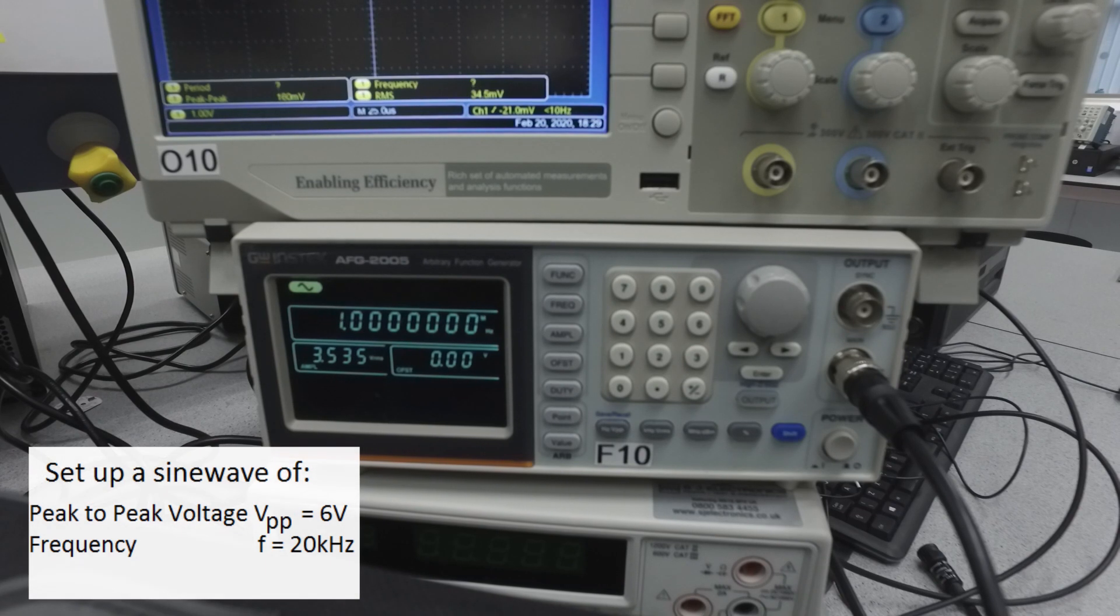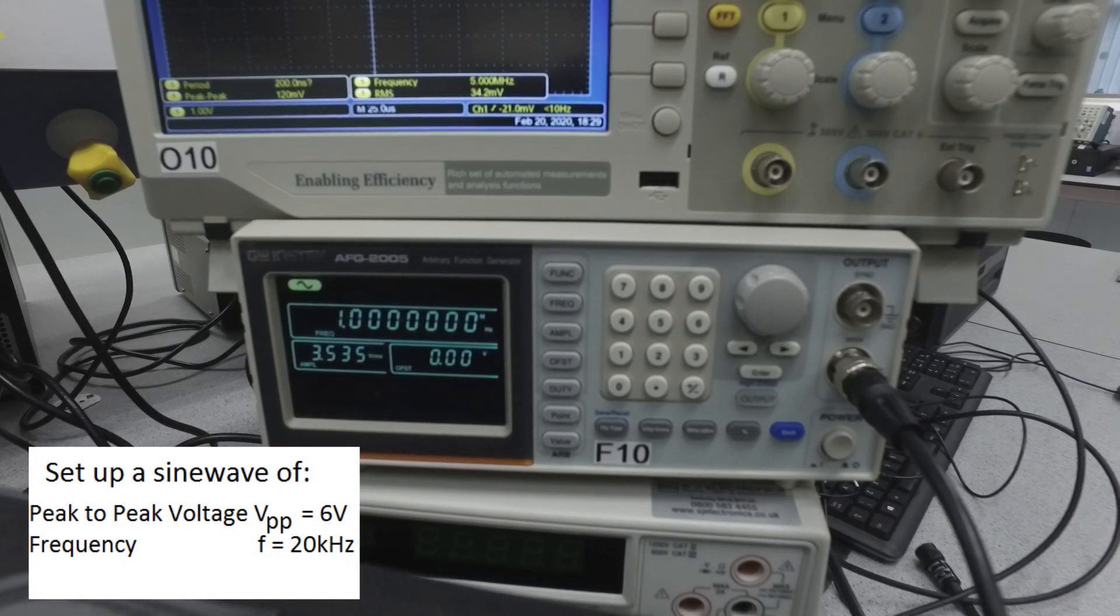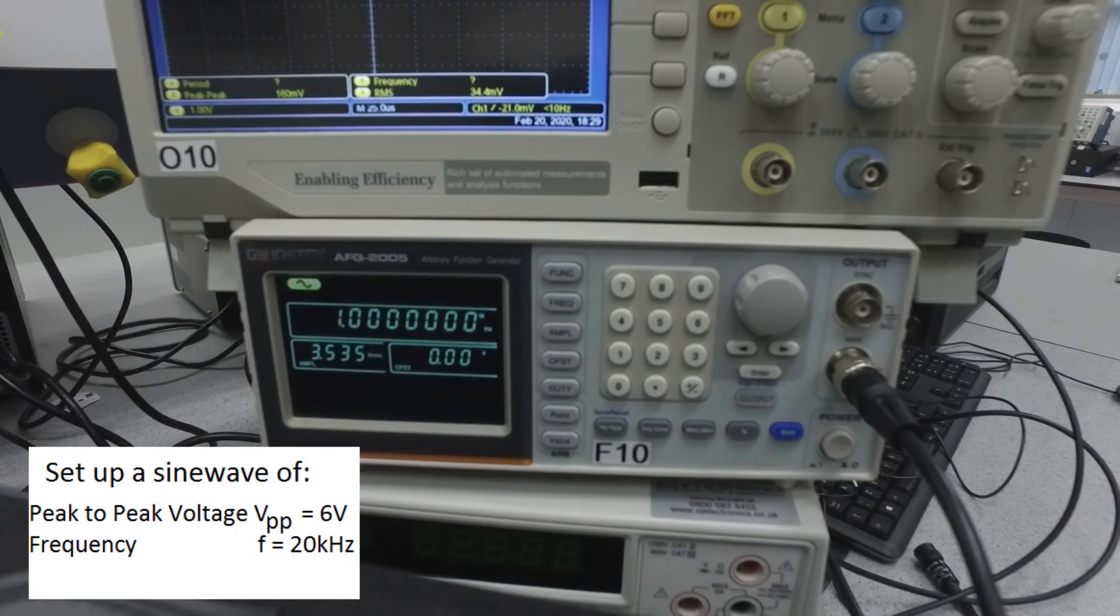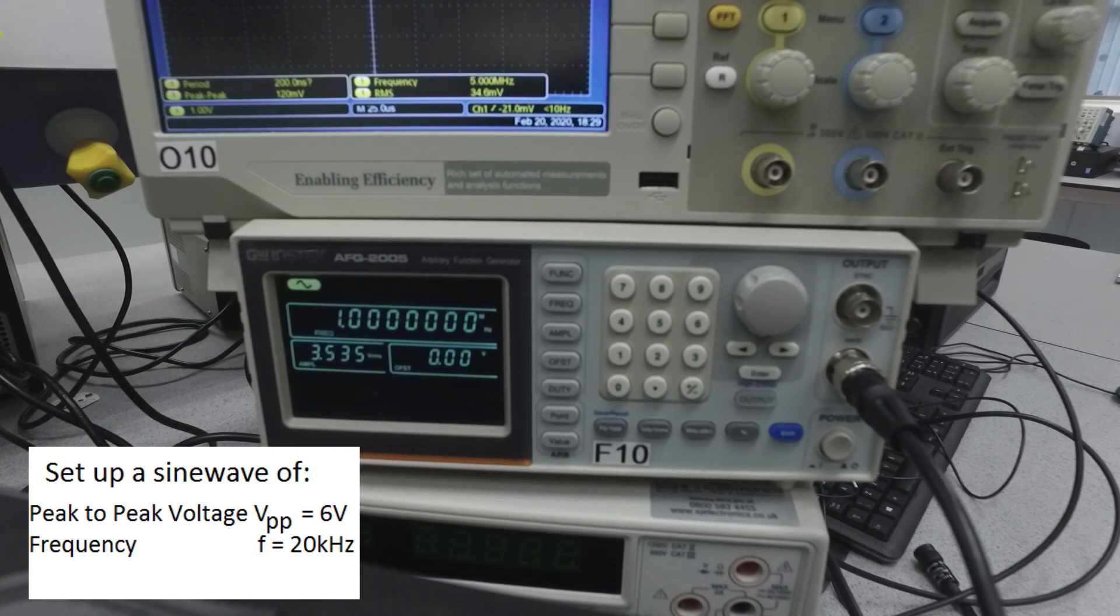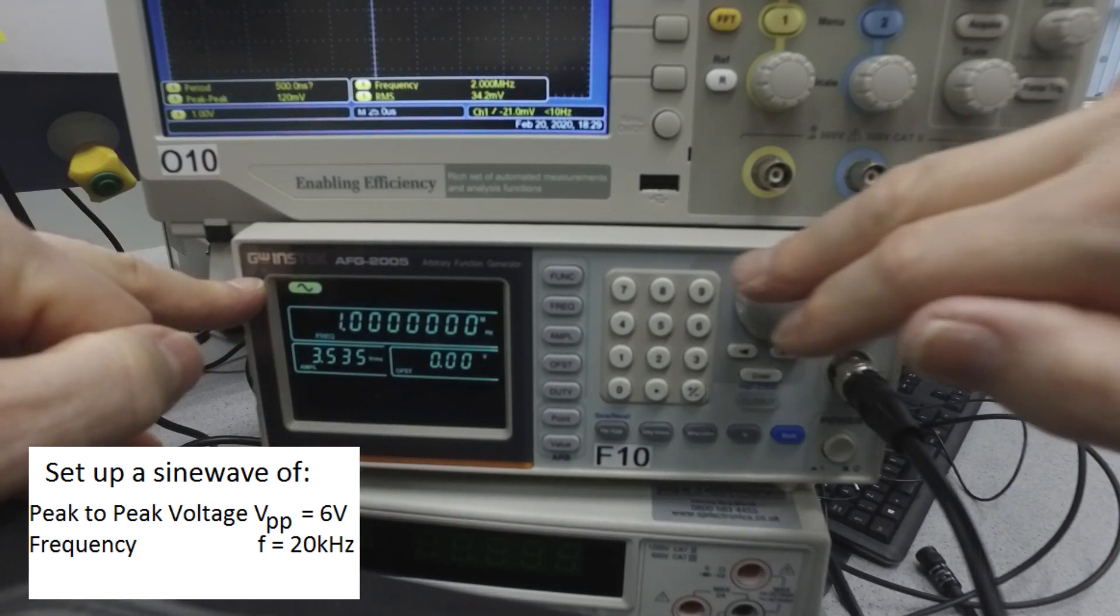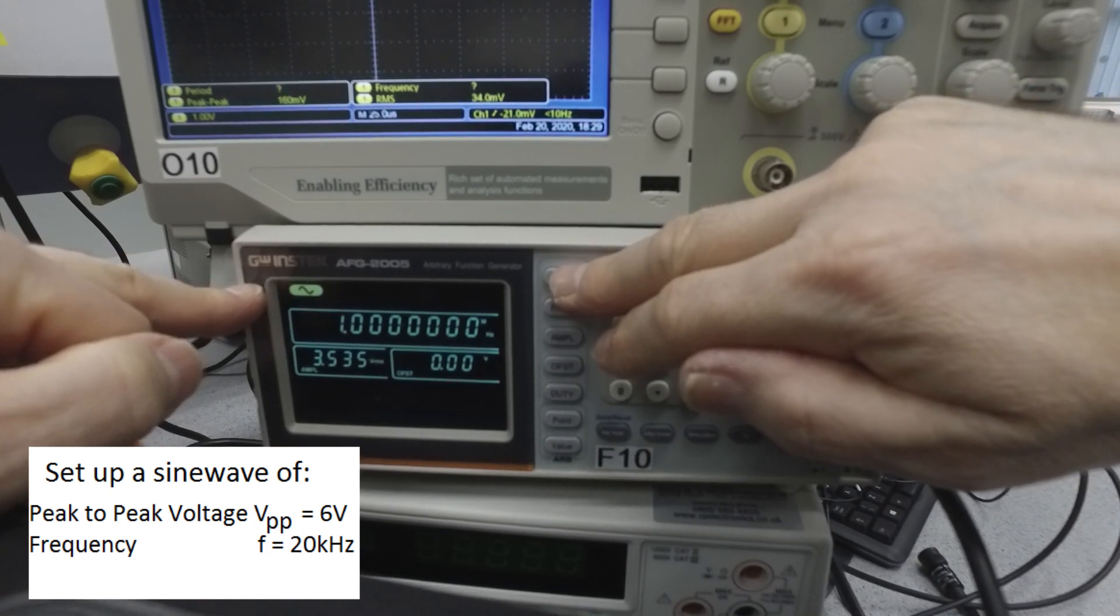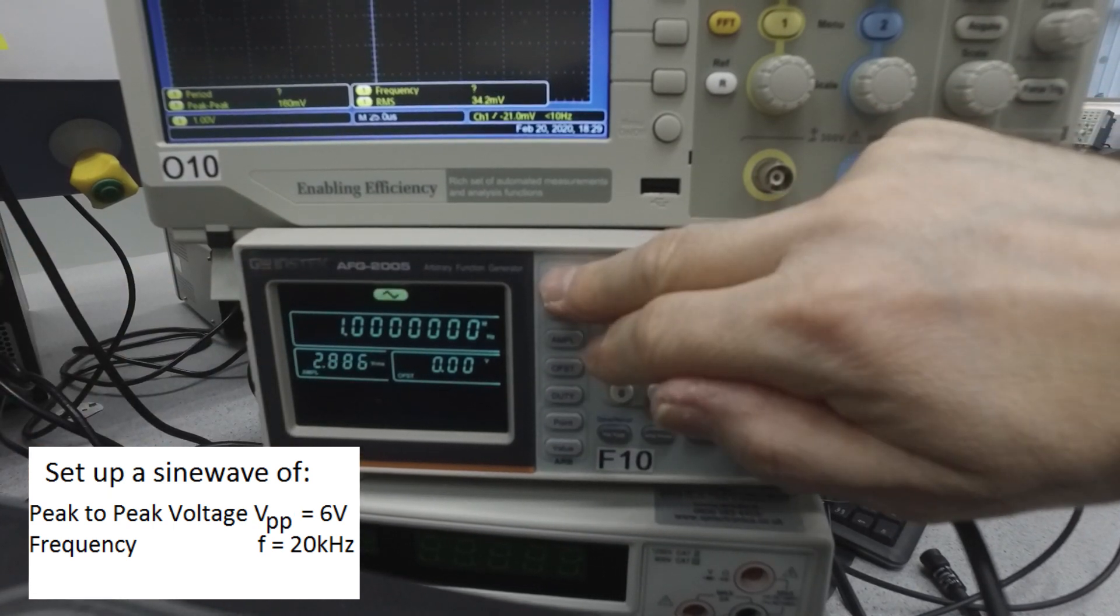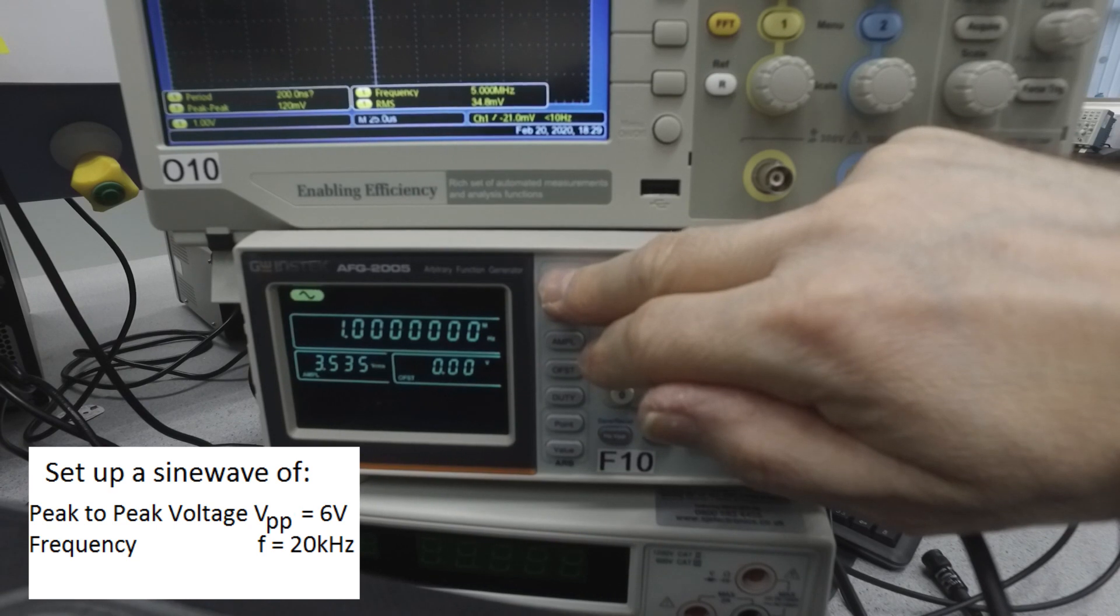The task we have in front of us asks us to set up a sinusoidal waveform with peak-to-peak voltage of 6 volts and a frequency of 20 kilohertz. So first of all, let's make sure we're on sine wave, which we are. If we weren't, we just cycle through that function button until sine wave's displayed.